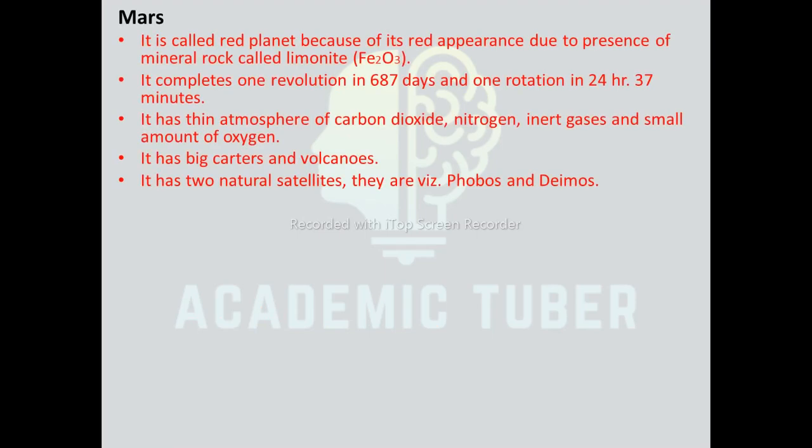Mars: it is called the red planet because of its red appearance due to the presence of a mineral rock called limonite. It accomplishes one revolution in 687 days and one rotation in 24 hours 37 minutes. It has a thin atmosphere of carbon dioxide, nitrogen, inert gases, and a small amount of oxygen. It has big craters and volcanoes, and two natural satellites — Phobos and Deimos.